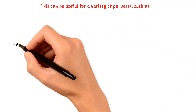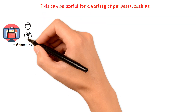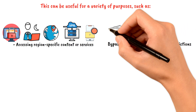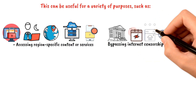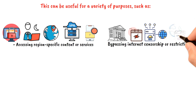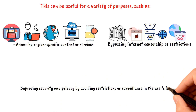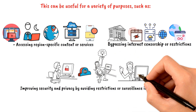Additionally, a VPN may not be legal or permitted in all jurisdictions. VPNs can be useful for accessing region-specific content or services that are otherwise unavailable in the user's location — for example, a user in a country with limited access to streaming services may use a VPN to access content available only in other countries. VPNs can also be used to bypass internet censorship imposed by governments, or to improve security and privacy for users in countries with limited internet freedom, allowing them to access the internet without being monitored or restricted by the government.